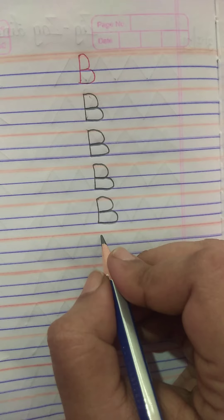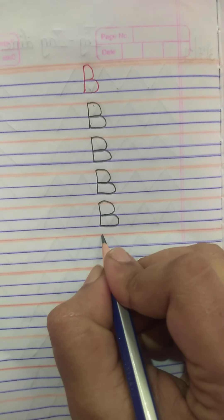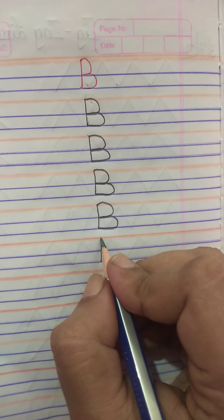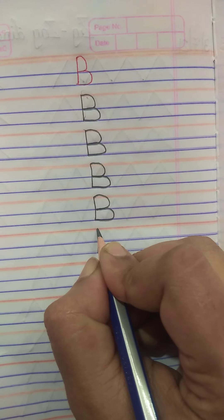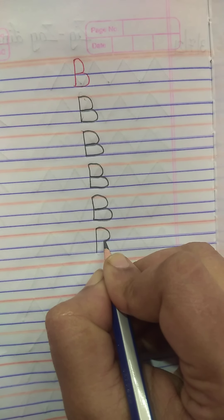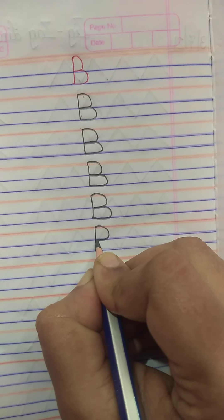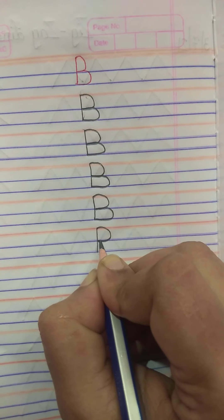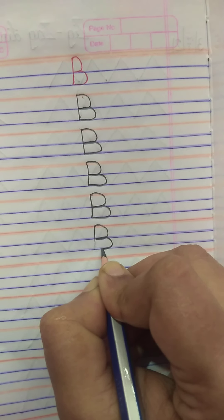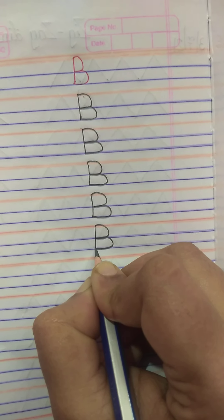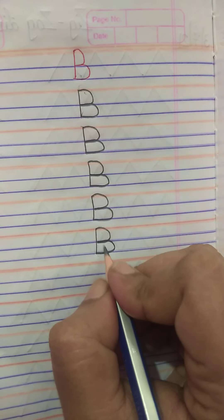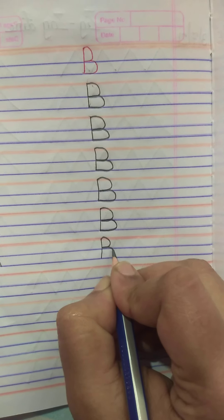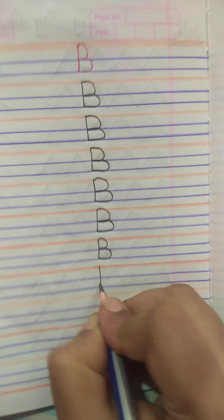One more time — see carefully. Standing line from red line to blue line. Make a half curve from red line to first blue line, touch the standing line. Again, make a curve between first blue line and second blue line. One standing line and two curves makes letter B, capital B.